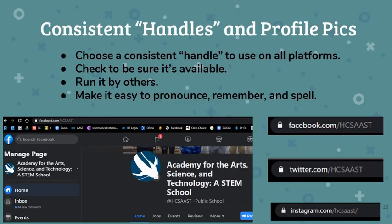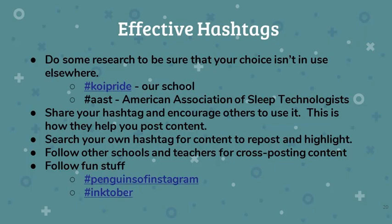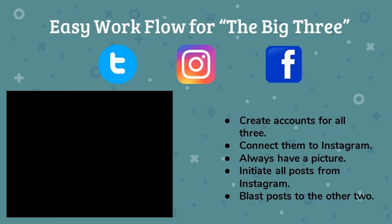You'll want all of your handles and your profile pictures to look consistent across each platform. It may take a little trial and error to find a username that works on all three platforms. Be sure your choice is easy to pronounce, remember, and spell. You will also want to use a hashtag or two in order to help people find your content. A hashtag is simply a keyword that you and others can use to tag your posts. You do not actually own or register hashtags, you just have to find something that isn't widely used by others. For example, my school's initials are AAST, but hashtag AAST is already used by the American Association of Sleep Technologists, so we use hashtag Koi Pride instead, since the Koi fish is our mascot. Now we will look at posting to multiple social media accounts from a mobile device.